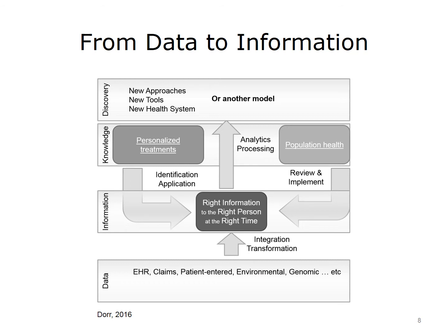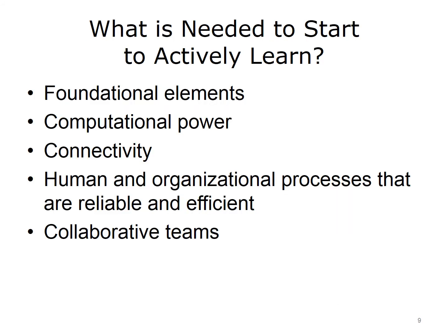Another way to think about this is how we use data and information to generate knowledge and discovery, and then provide that back to the right person at the right time. This model, developed by DOR, considers data to be the raw bits and bytes in databases. After the data is integrated and transformed, it can be considered information — that is, data with context and relationships. Information combined with knowledge can be used to drive decisions. For example, clinical decision support can control how information and knowledge are presented to people working to improve health. Information can also be analyzed at the individual and population level to generate new approaches, tools, and even a new kind of health system infrastructure, with knowledge fed back to care.